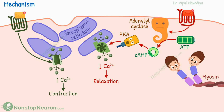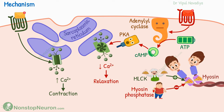Some factors directly target the contractile machinery. As discussed in the video on excitation-contraction coupling in smooth muscle, phosphorylation of the myosin light chain by MLCK is required to activate the contractile machinery, and myosin phosphatase removes this phosphate to inactivate it. Certain factors directly increase this phosphorylation or decrease dephosphorylation, so the resultant increased phosphorylated state increases contraction.